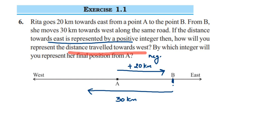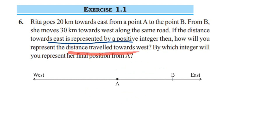Then they are asking one more thing: by which integer will you represent her final position from A? They are asking the total distance travelled by her, at what point she is standing, and how we are going to represent it — positive or negative. We have answered the first part: if she travelled towards the west, it will be negative.